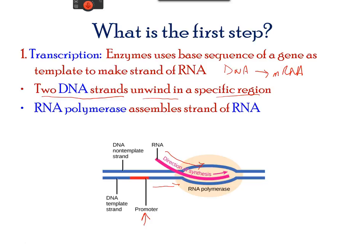Transcription always proceeds on one strand, called the template strand. The mRNA product is identical to the complementary DNA strand, with the exception that the RNA strand contains uracil in place of the thymine found in DNA. RNA polymerase is the enzyme that adds nucleotides in the direction of 5' to 3' sequence.